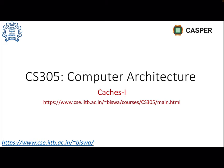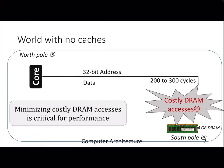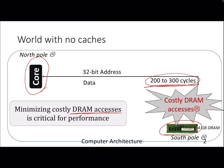Welcome to this lecture on caches, where we will discuss the SRAM-based memory in the memory hierarchy. Before jumping into caches, let's consider what happens if we don't have caches. The processor demands data by sending an address, and the data comes from DRAM. As we've seen, DRAM takes around hundreds of cycles to return data, so the processor has to wait — and minimizing this costly DRAM access is critical for any application, since your final IPC and throughput will be affected by the number of DRAM accesses.